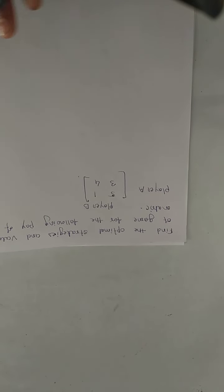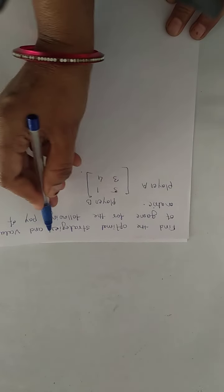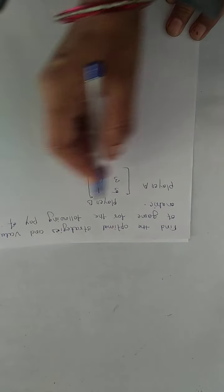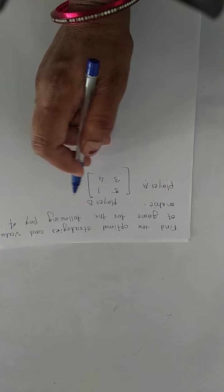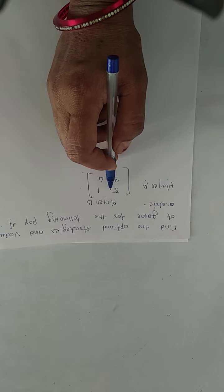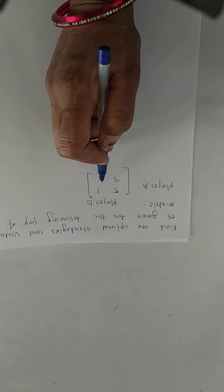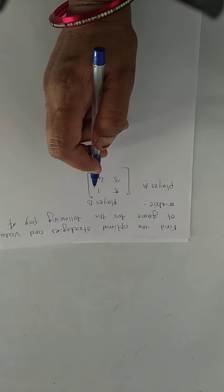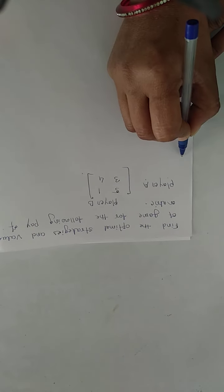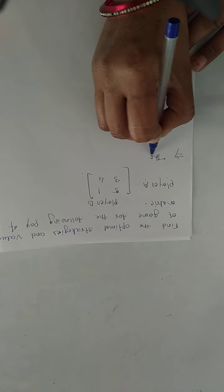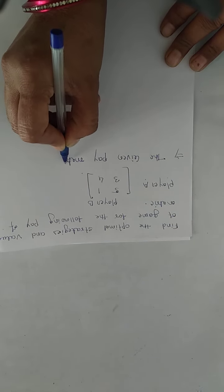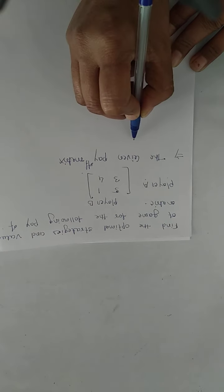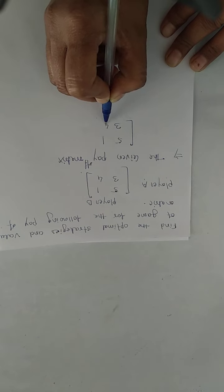Now we see an example for mixed strategy. Find the optimal strategy and gain value of the following payoff matrix. The matrix is given as player A and player B, and the matrix entries are: 5, 1, 3, 4. First, write the given payoff matrix.